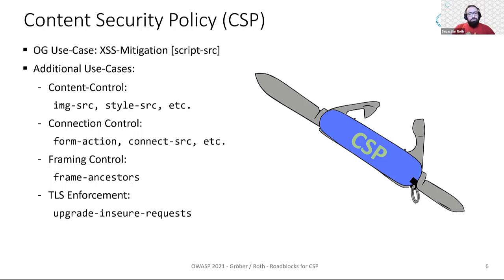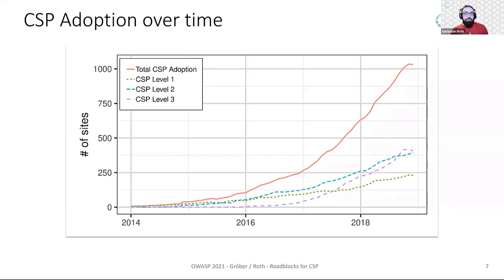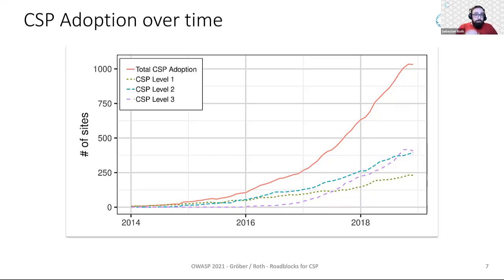Let's take a look at how the adoption of CSP has increased since its release. In a previous work, we looked at the CSP adoption of the historical top 10,000 websites. As you can see in the red line of this graph, the overall adoption of CSP is increasing, and more than 10% of the top sites are currently deploying CSP. Also, the usage of new features in CSP levels 2 and 3 is increasing. So everything looks okay-ish, right?